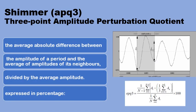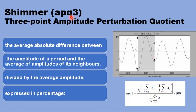There are several amplitude perturbation quotients — basically running averages of three, five, or eleven cycles. The shimmer APQ3, the three-point amplitude perturbation quotient, is obtained by comparing the amplitude of a certain glottal cycle to the average amplitude of three cycles: the one before, the one under test, and the one after. The average of these three cycles is subtracted from the amplitude of the middle cycle, then divided by the average amplitude of the three cycles together, expressed as a percentage.